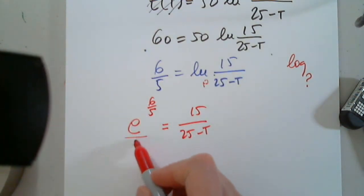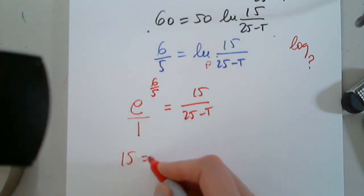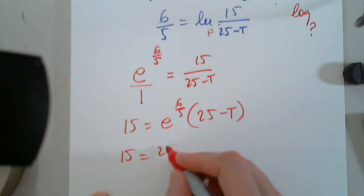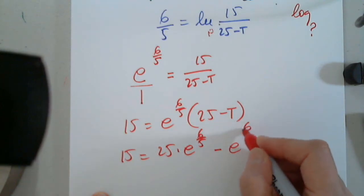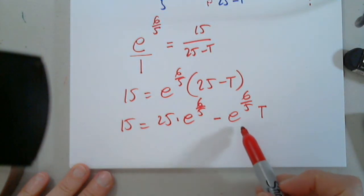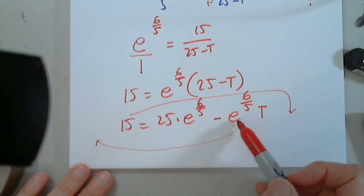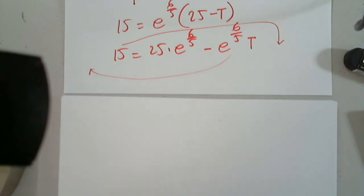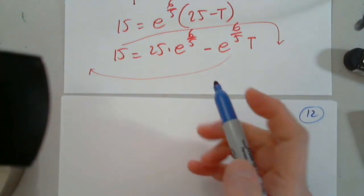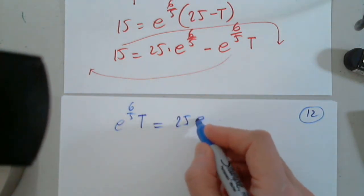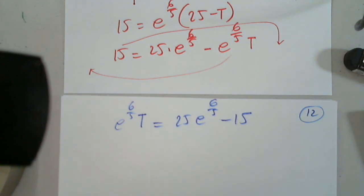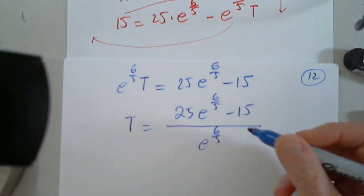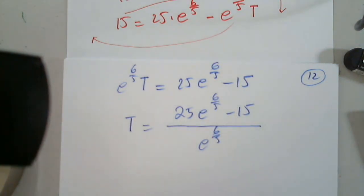E raised to this power equals this number. So just cross multiply. So this is over 1. It's a proportion. 15 equals that number times (25-T). I'll distribute. 15 = 25·e^(6/5) - e^(6/5)·T. I will move this term here and this term here and divide by this. One of your colleagues from another class just told me, yeah, your calculus is one line and your algebra 5 pages. Yep, I agree. He is right. So e^(6/5)·T = 25·e^(6/5) - 15. So T will be all this. If you simplify these two, it will be a tragedy. A complete tragedy.